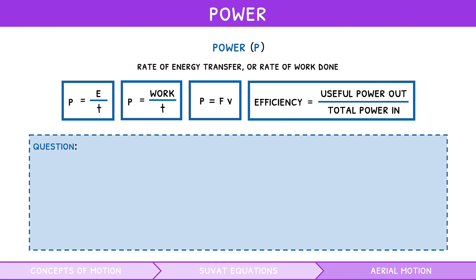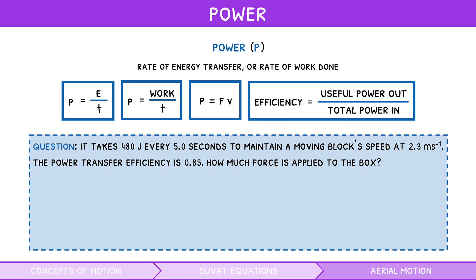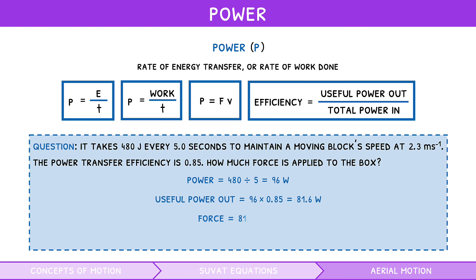It takes 480 joules every 5 seconds to maintain a moving block's speed at 2.3 m/s. The power transfer efficiency is 0.85. How much force is applied to the box? The total power input is energy divided by time, which gives 96 watts. The useful power output is efficiency times total power input, which is 81.6 watts. Thus, the force applied is power divided by speed, which is 35 Newtons.